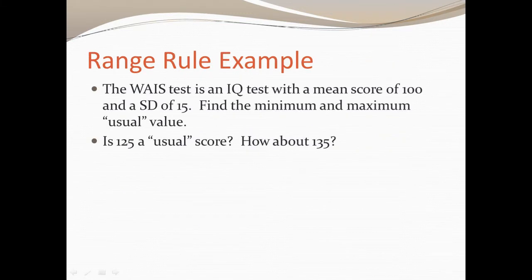Here's a range rule example. The WAIS test, the Wechsler Adult Intelligence Scale test, is an IQ test that has a mean score of 100 and a standard deviation of 15. Let's find the minimum and maximum usual values and then define whether 125 and 135 are usual or unusual scores.